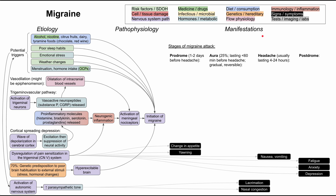Now let's talk about the manifestations. You can break down a migraine into different stages: the prodrome, the aura, the headache, and the postdrome. You don't necessarily have all of these stages. Only about 25% of people report having an aura. The prodrome and postdrome are also optional — you might have them without realizing it. But recognizing them can help you identify when a migraine is coming and when to take medication to prevent it from getting worse.